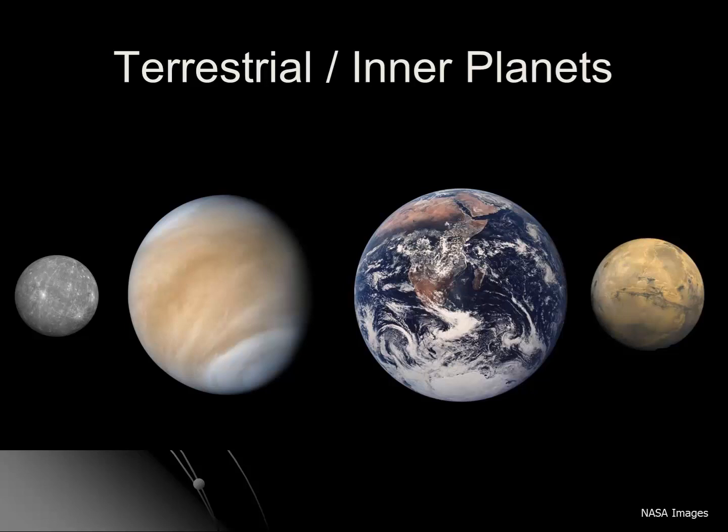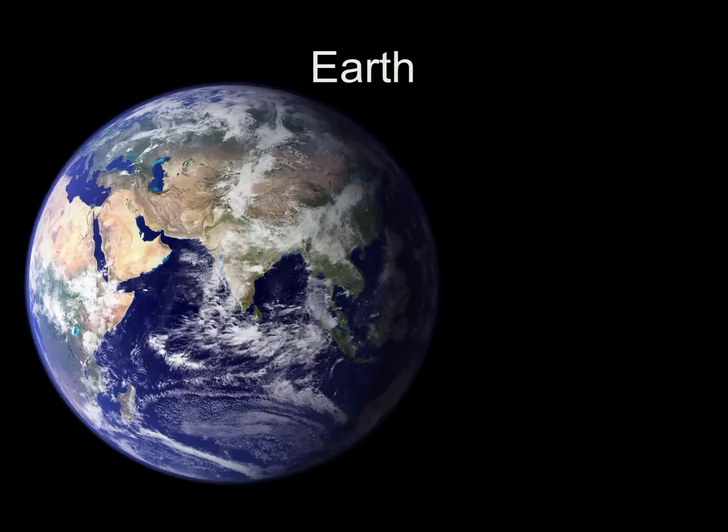Terrestrial means Earth-like. These are the four planets that are also closest to the Sun: Mercury, Venus, Earth, and Mars. In this image, we can see all four planets scaled to appropriate size. From here, we can see Earth is definitely the largest, and Mercury is by far the smallest. Let's take a look at each, and we'll start with our home planet Earth.